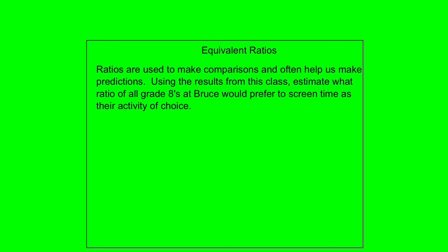The goal here is to eventually move to using ratios to solve problems. Ratios are used to make comparisons, as we've already seen — comparing activities that kids enjoy, like who likes screen time compared to who wants sports, or artistic activities. But ratios can also help us make predictions as well.